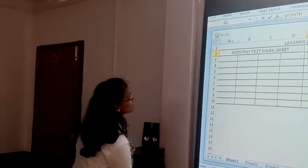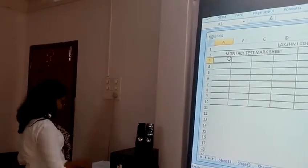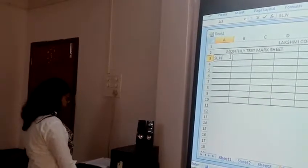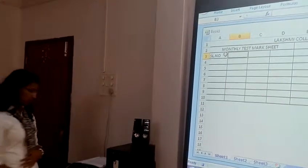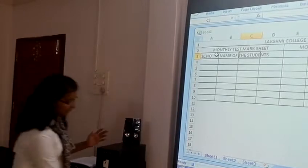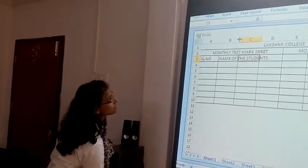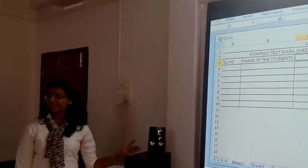And then next we write which month we are doing. So, we write the month, fine, okay? And here we save it because we are doing the format, okay? Fine. Then we write the, I mean, we write the title here, the SNL number, the numbers, okay? So, SNL numbers. And then we write the name of the students, okay?